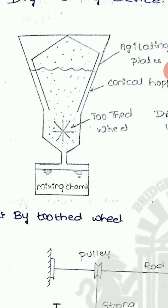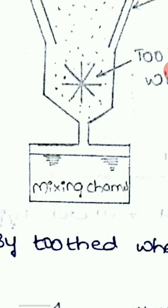The toothed wheel type of feeding device can be seen in this picture. Agitating plates are provided and the toothed wheel is provided in the conical hopper. The dry chemical powder is poured into the conical hopper, which enters into the toothed wheel. This wheel continuously rotates so that proper mixing of the chemicals occurs, and they are fed into the chemical channel.